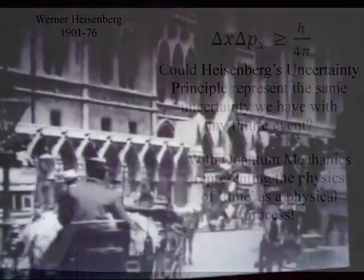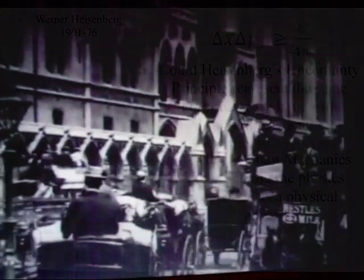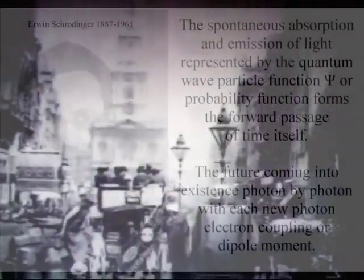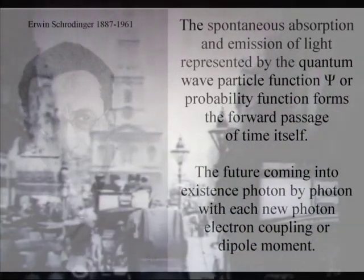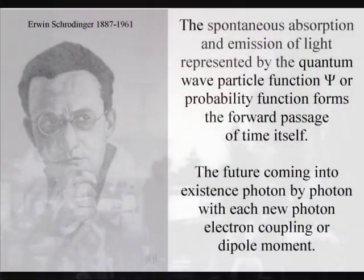If we look at the process that forms Heisenberg's uncertainty principle, we find that it is formed by the quantum wave particle function. This is a mathematical function formed by the spontaneous absorption and emission of light.